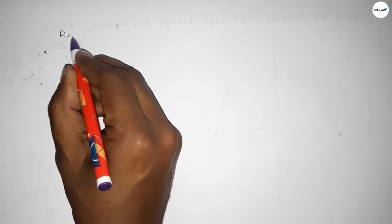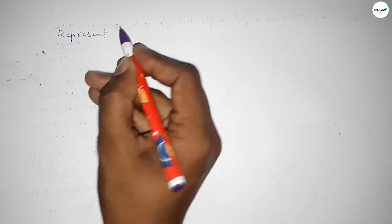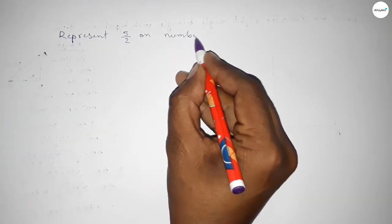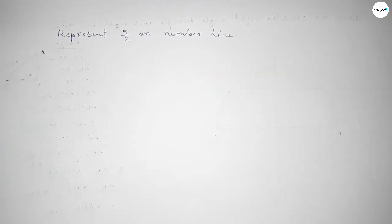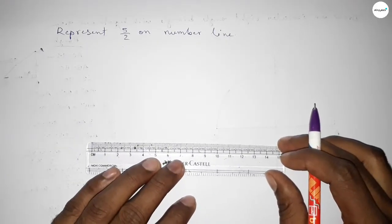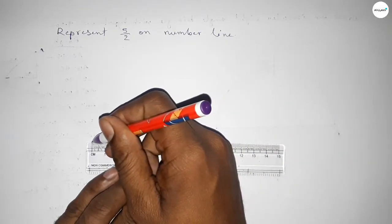Hi everyone, welcome to SISR classes. Today in this video we have to represent 5 over 2 on a number line. So let's start the video. First of all, we have to draw here the number line, so first drawing here.